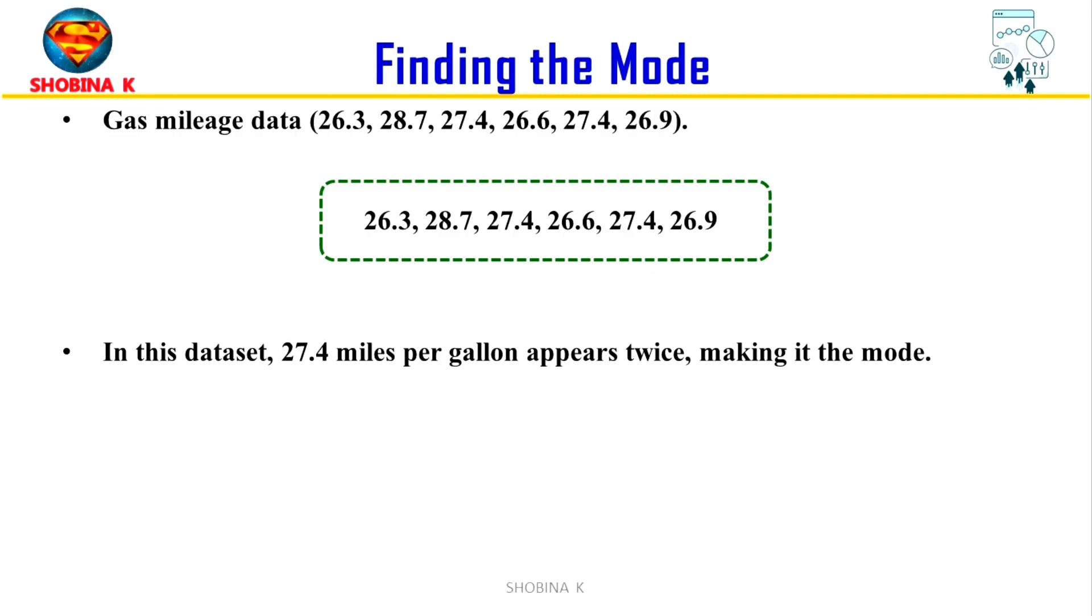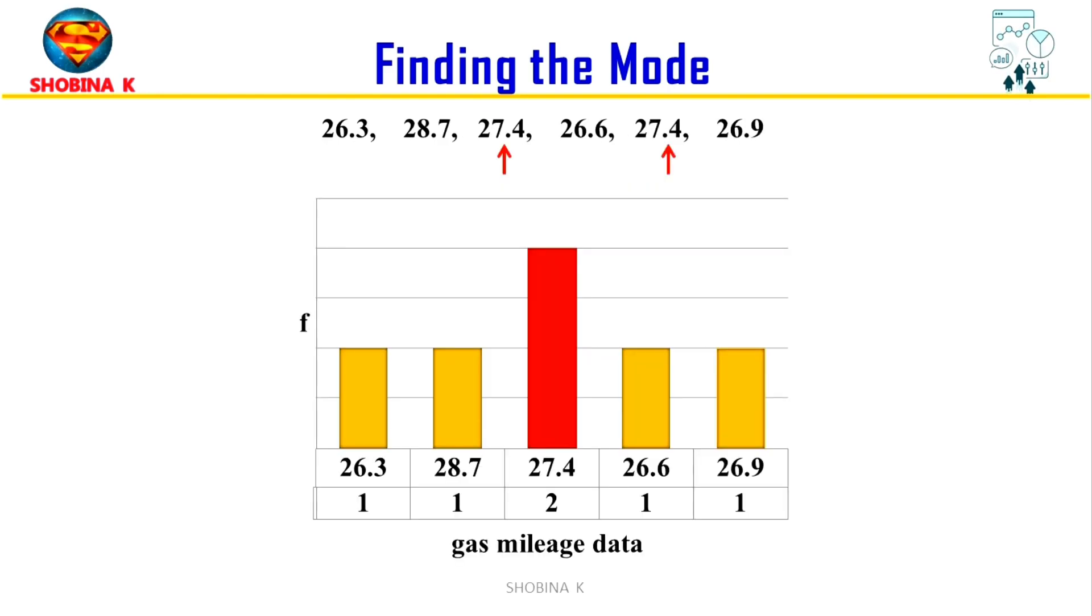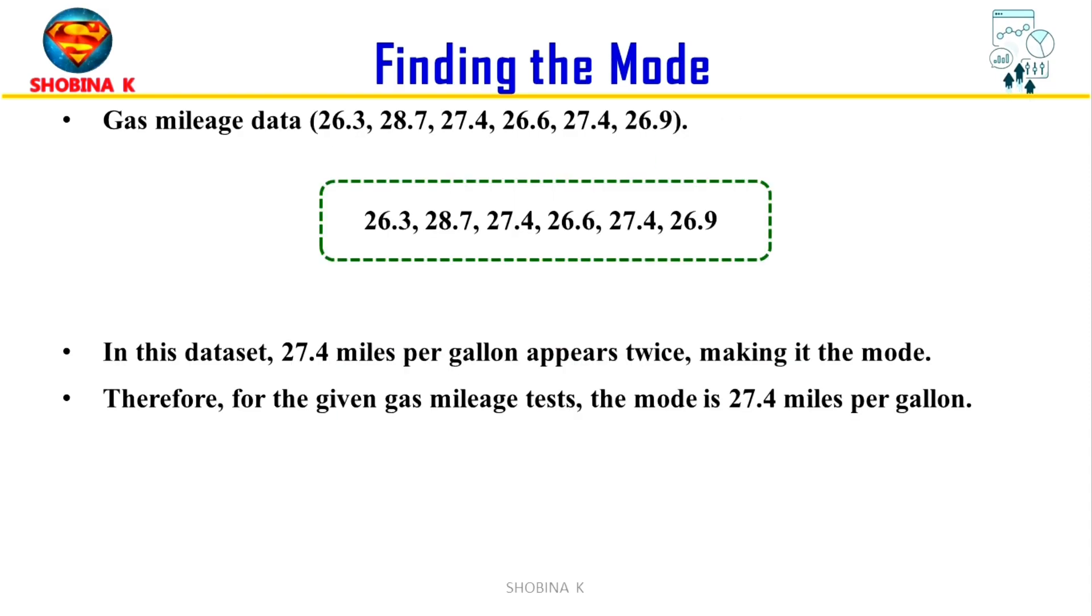To find the mode, we simply identify the value that occurs most frequently. In our dataset, 27.4 appears twice, making it the mode. Therefore, the mode for the gas mileage data is 27.4 miles per gallon.